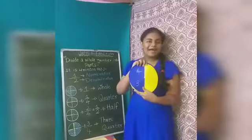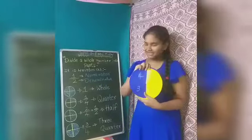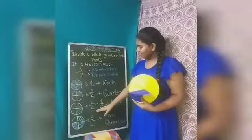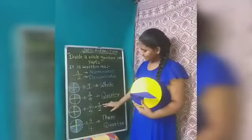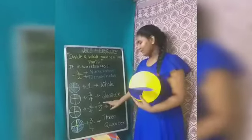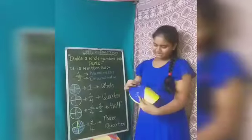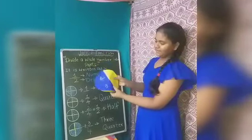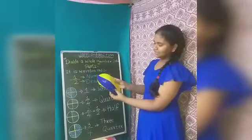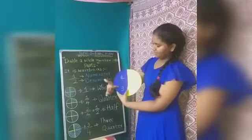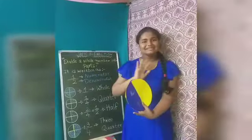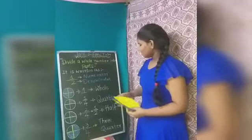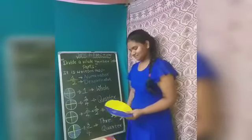Here 2 parts are shaded, which is written in the form of 2 upon 4. Or you can also write it in the form of 1 upon 2, because 1 full part is colored and 1 more part is not colored — it is blank. So it is called a half.